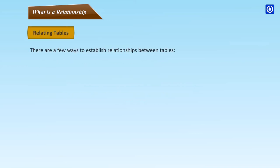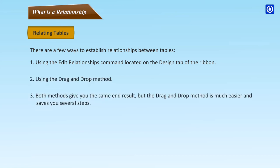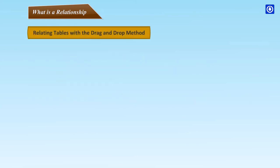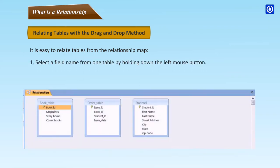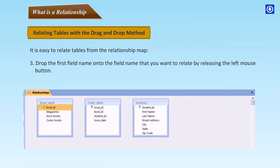Relating Tables: There are a few ways to establish relationships between tables — using the Edit Relationships command on the Design tab, or using the Drag and Drop method. The Drag and Drop method is much easier and saves several steps. To relate tables using Drag and Drop, select a field name from one table by holding down the left mouse button, drag the field name to the other table, and drop it onto the field name you want to relate by releasing the mouse button.